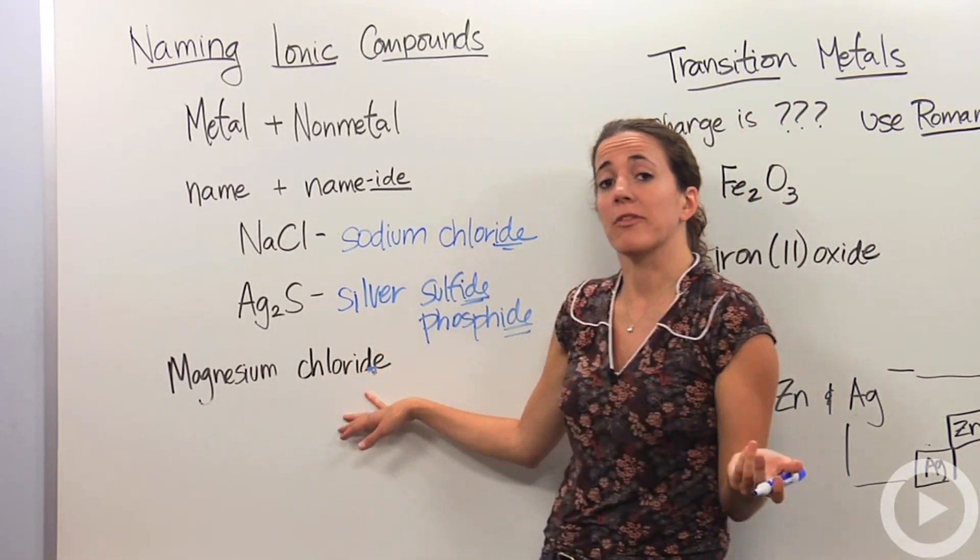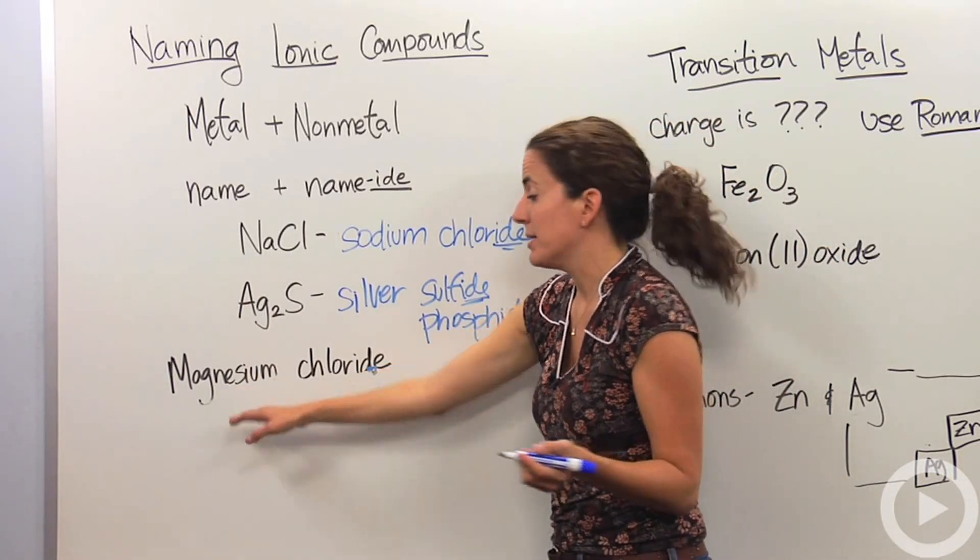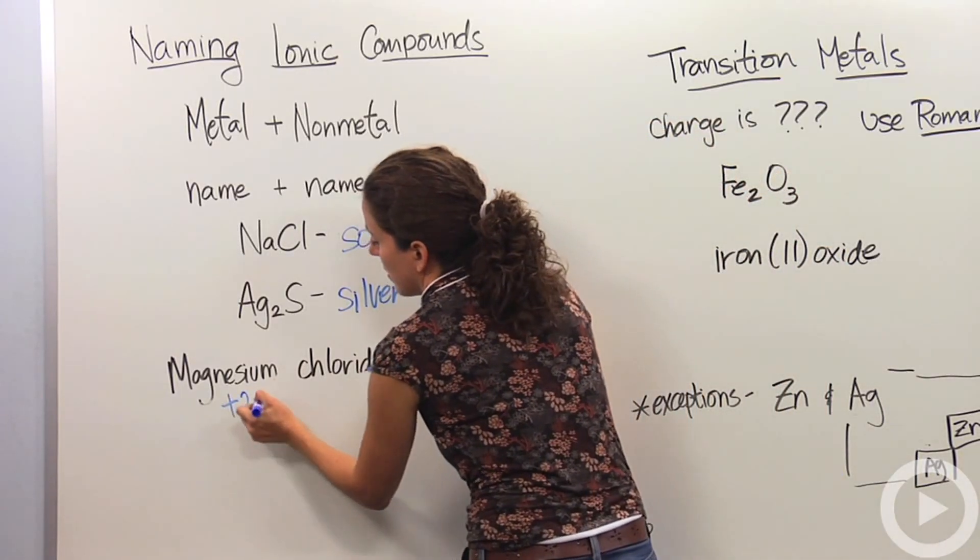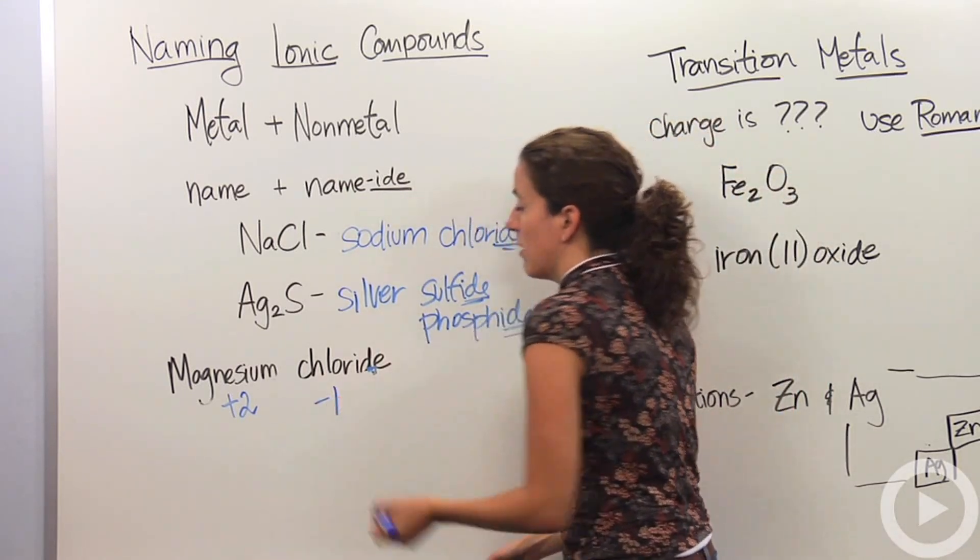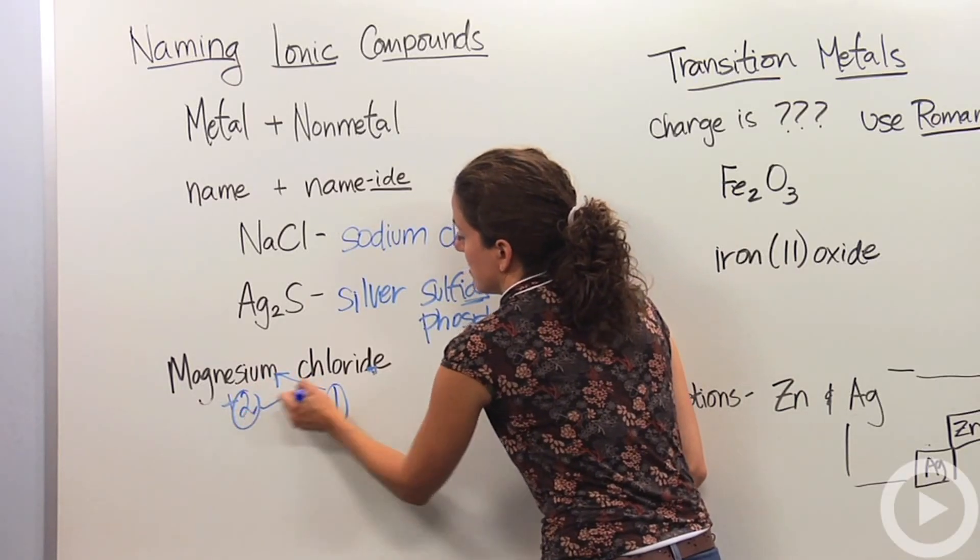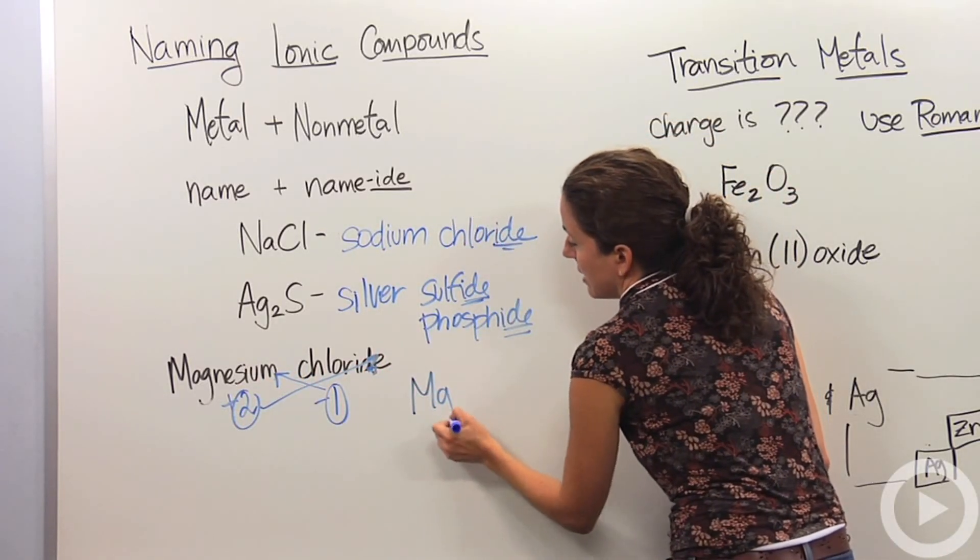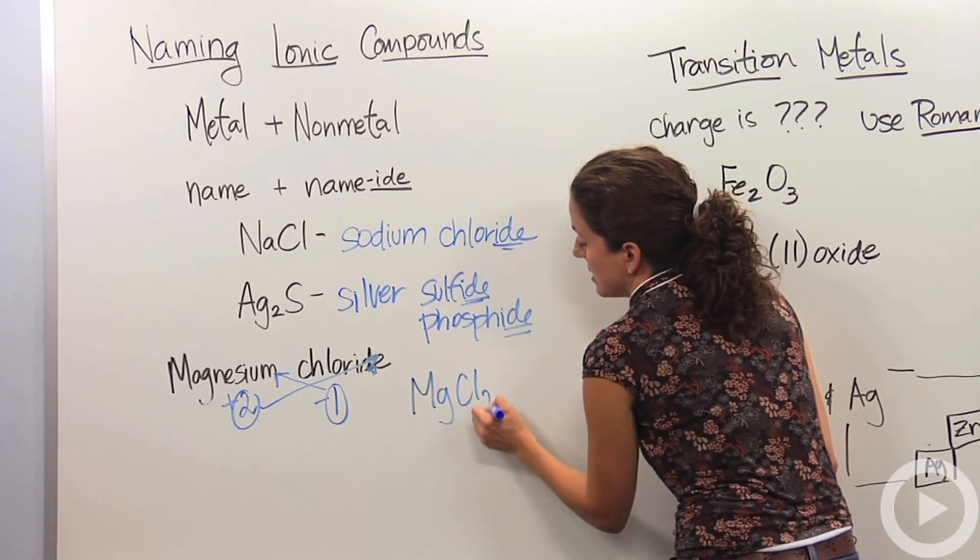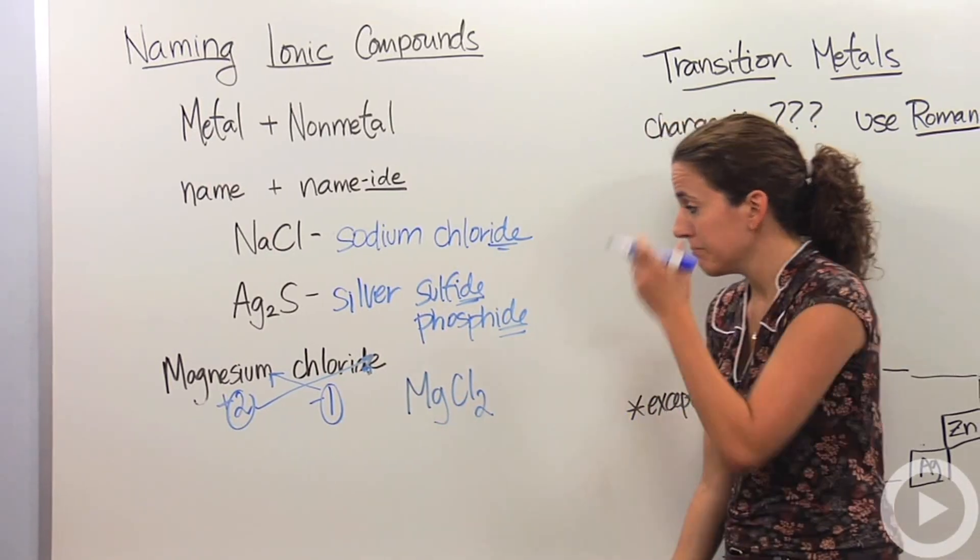But what if you're given the name? How do you figure out the formula? We have magnesium, which is a positive 2 charge. And we have chloride, which is in group 7 making a negative 1 charge. When they come together, we're going to cross the charges to make our subscripts. MgCl2. This gives us our neutral compound, magnesium chloride.